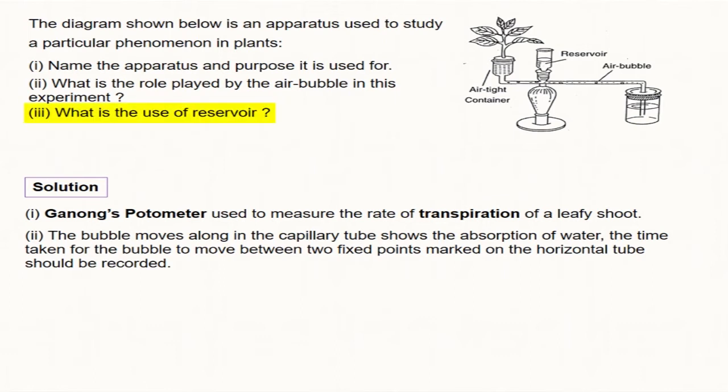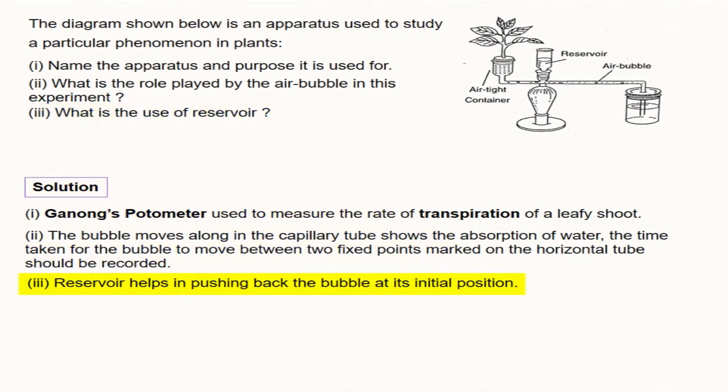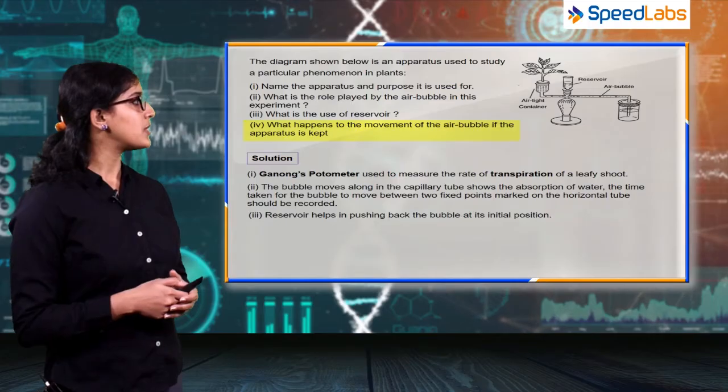The next question from this diagram is: what is the use of the reservoir? As you can see in this diagram, there is a reservoir of water just to push back the bubble at its initial position. When you are done with one experiment with this apparatus, you have to fix the bubble again at its initial position, so you release water from the reservoir to push back the bubble.